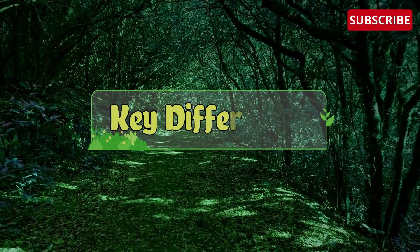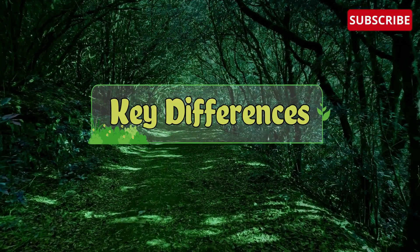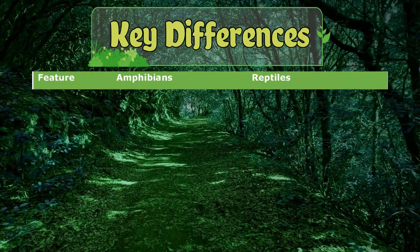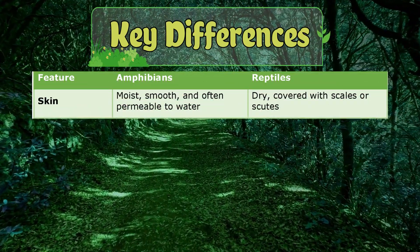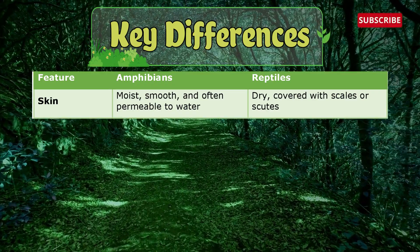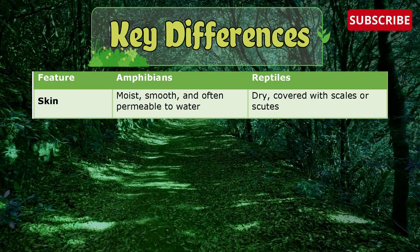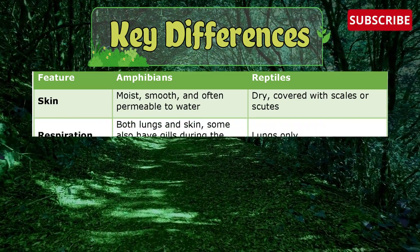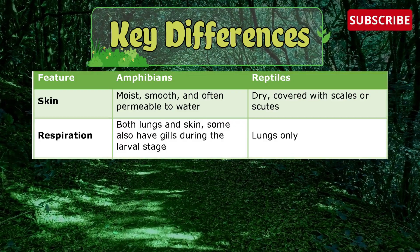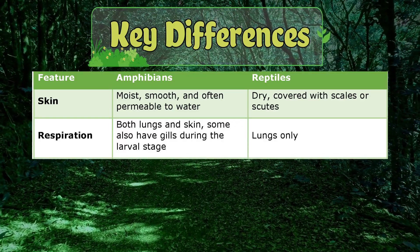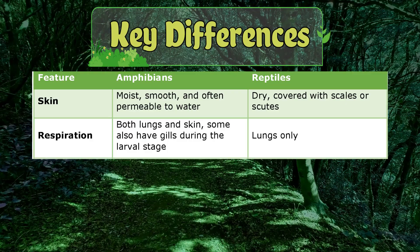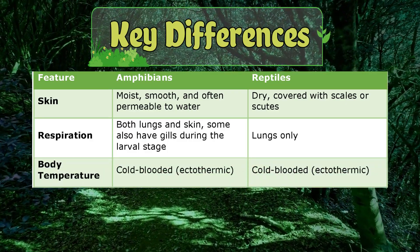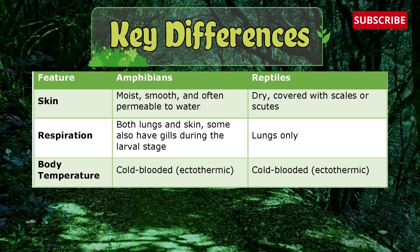Now let's dive into the key differences between Amphibians vs Reptiles. Regarding skin: amphibians have moist, smooth skin often permeable to water, whereas reptiles' skin is dry and covered with scales. For respiration, amphibians use both lungs and skin, and some have gills during the larval stage, whereas reptiles use only lungs. Body temperature is cold-blooded (ectothermic) in both groups.